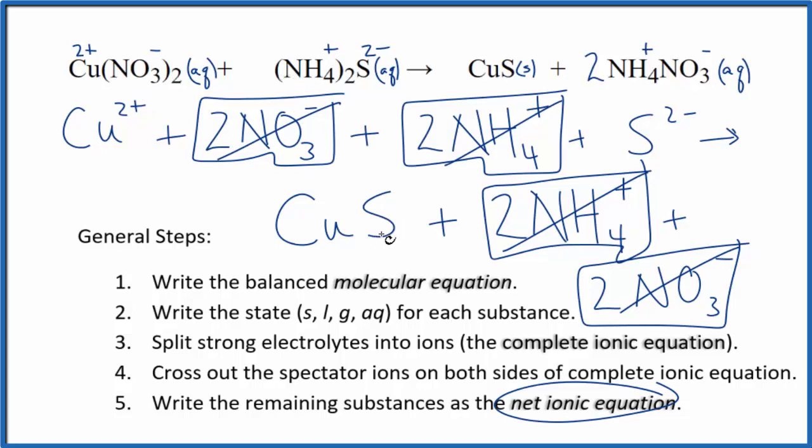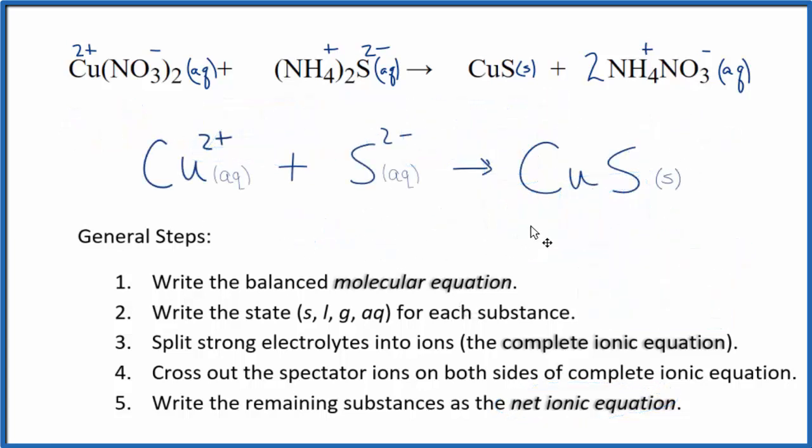That's the net ionic equation for copper 2 nitrate plus ammonium sulfide. I'll clean this up and write the states. We'll have our net ionic equation. So this is the balanced net ionic equation for Cu(NO3)2 plus (NH4)2S.